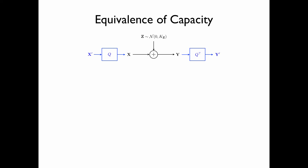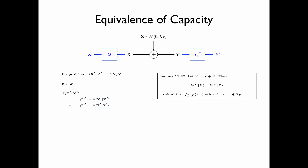We now prove the equivalence of capacity between the equivalent system and the original system, by proving that the mutual information I(x'; y') equals I(x; y). The mutual information I(x'; y') equals the differential entropy of y' minus the differential entropy of y' given x', where the latter equals the differential entropy of z' given x', by a vector generalization of Lemma 11.22.